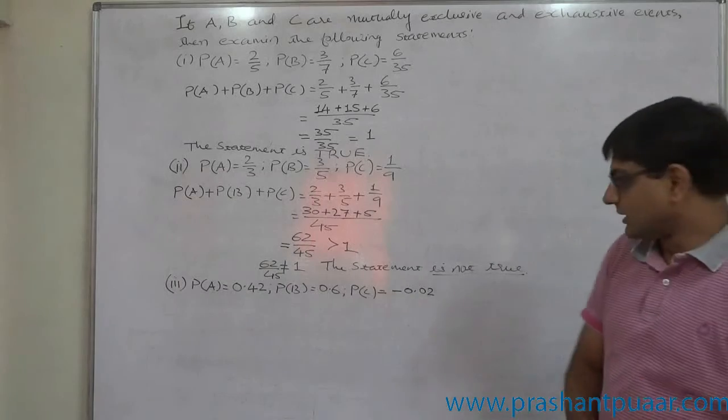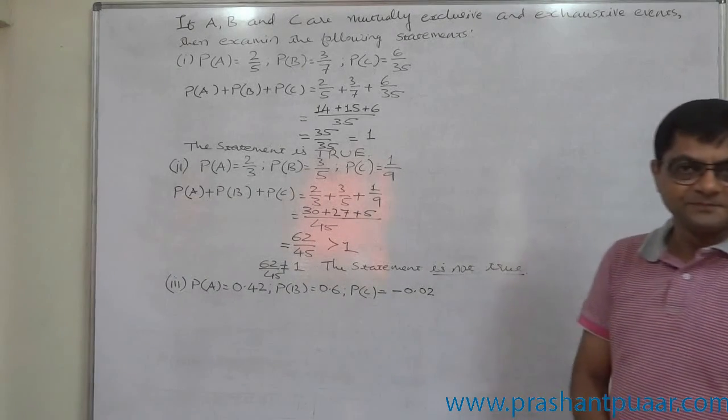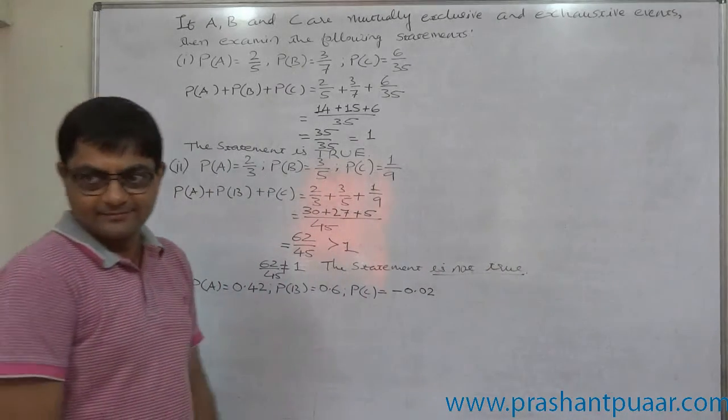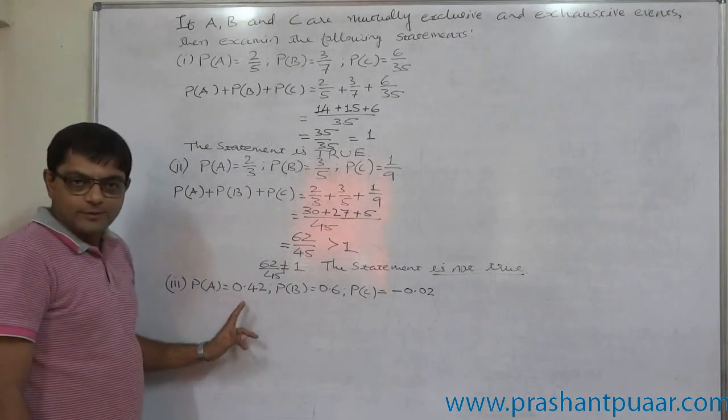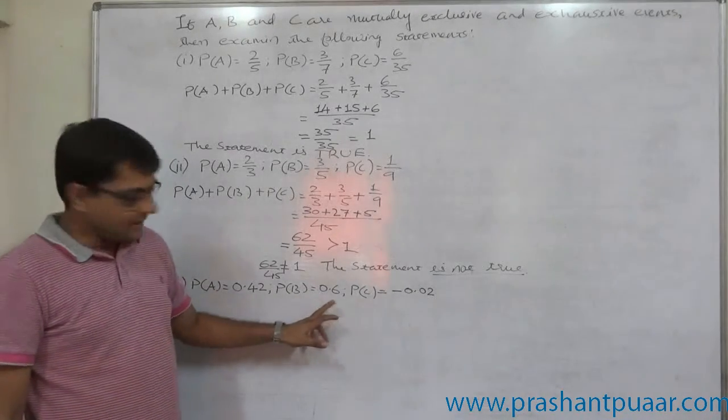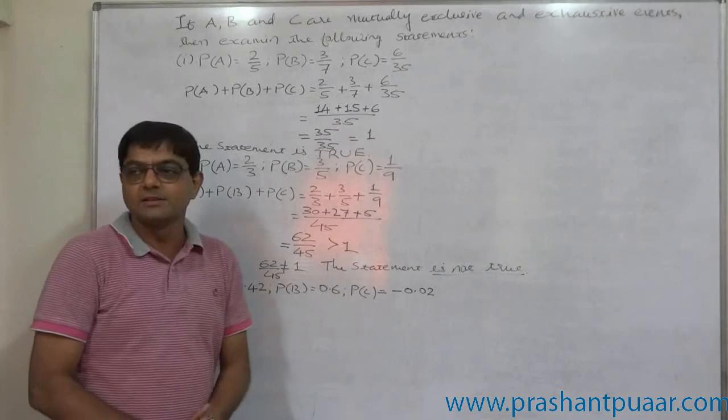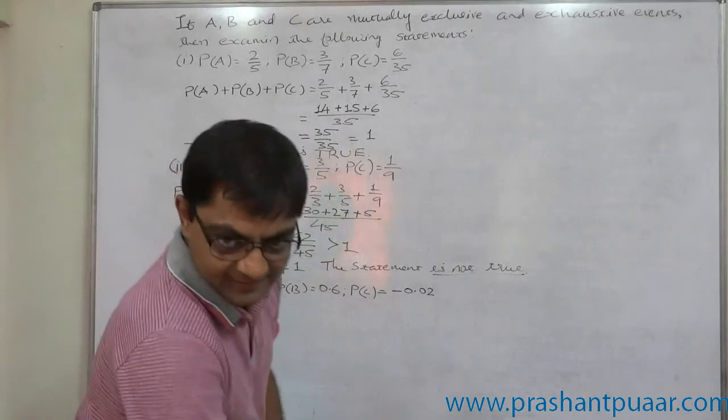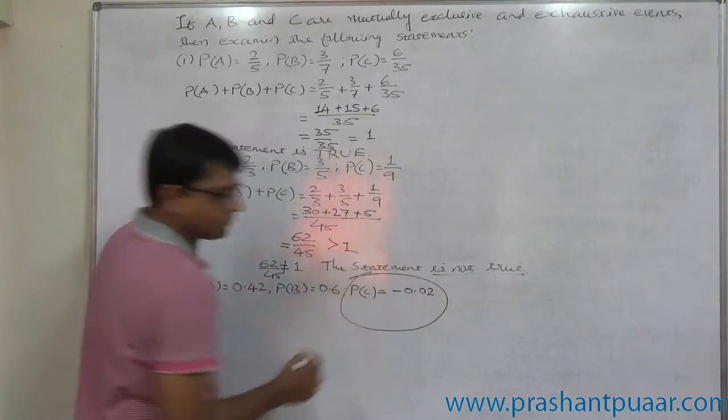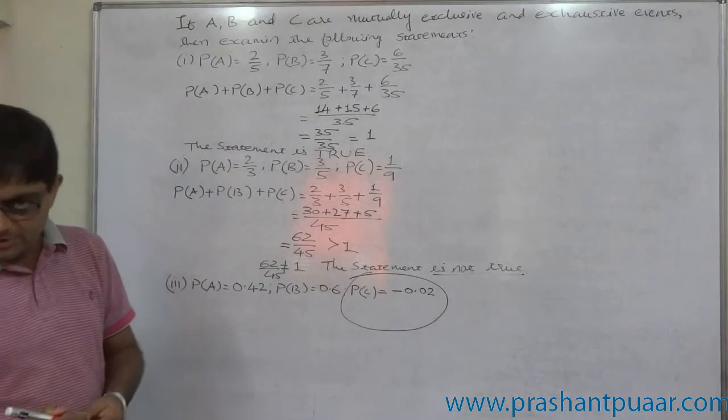Now the third case, a tricky one. A, B and C are mutually exclusive and exhaustive events. P of A given to be 0.42, P of B given to be 0.6 and P of C given to be minus 0.02. The landmark case is P of C is minus 0.02. No need of summation.